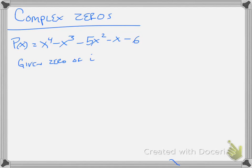Now we're going to find all the zeros — not just the real ones — and factor it even if it has an i. So in this problem, p of x, you have this quartic, and you're given the zero of i.